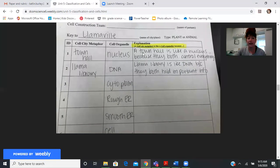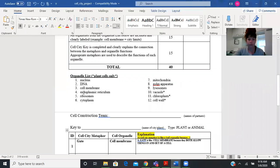Here is my example of my Llamaville of how you're expected to complete the assignment. So nucleus is like town hall - a town hall is like a nucleus because they both control everything. The DNA is like the llama library - the llama library is like DNA because they both hold important information.